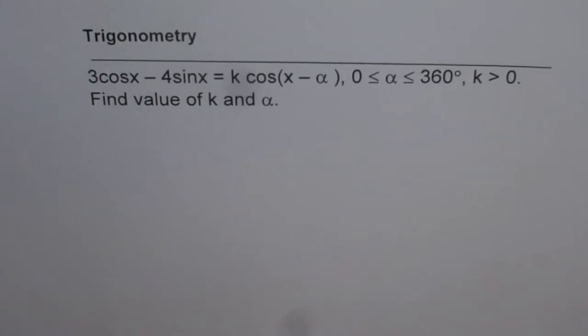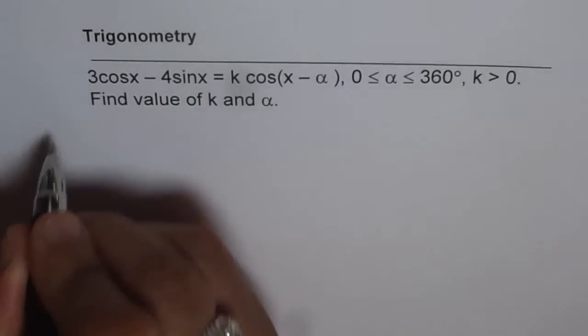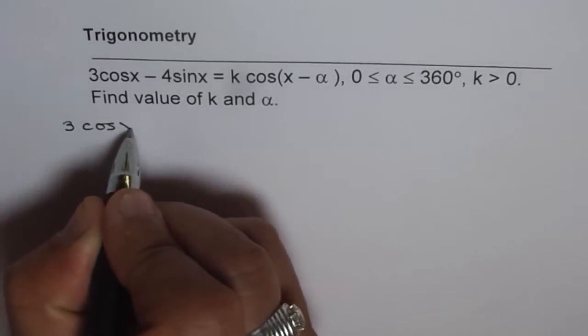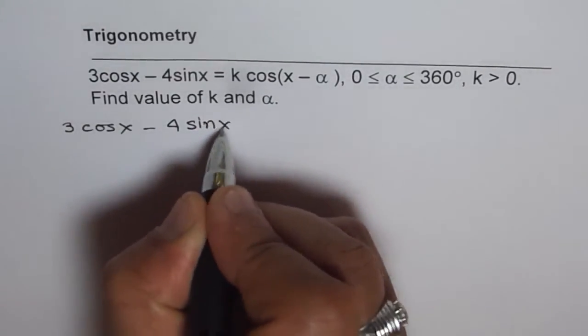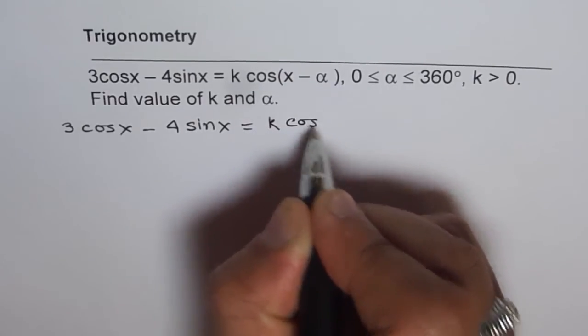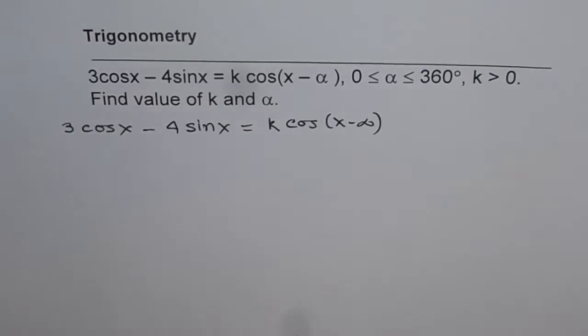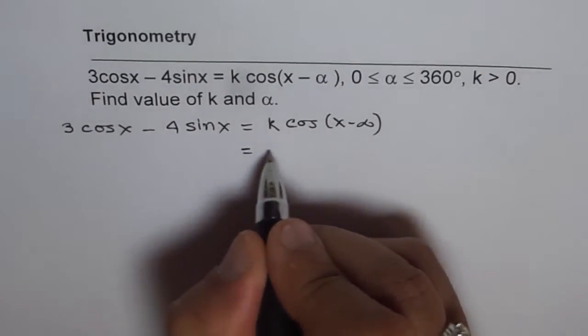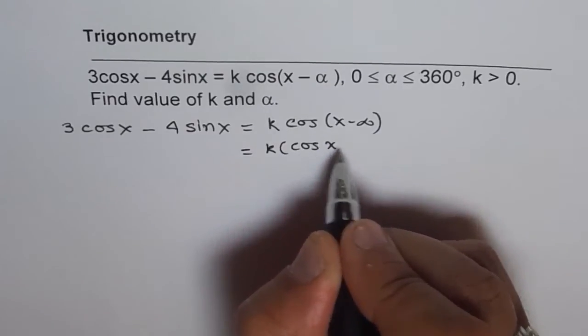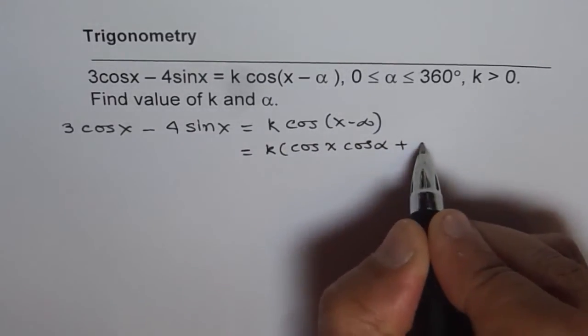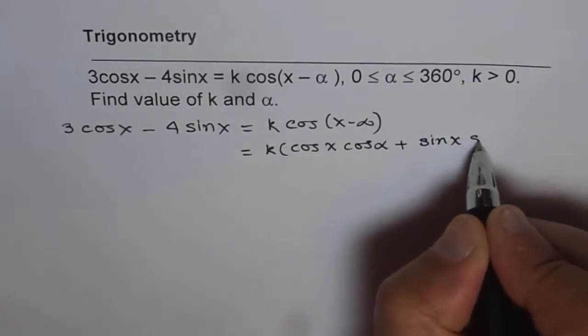Now this is a very important question. Some of you are very conversant with it as a simple harmonic motion equation. Let's try to understand this equation. 3 cos x minus 4 sine x equals to k times cos of x minus alpha. Now cos of x minus alpha can be expanded and we can write this as k times cos x cos alpha plus sine x sine alpha.